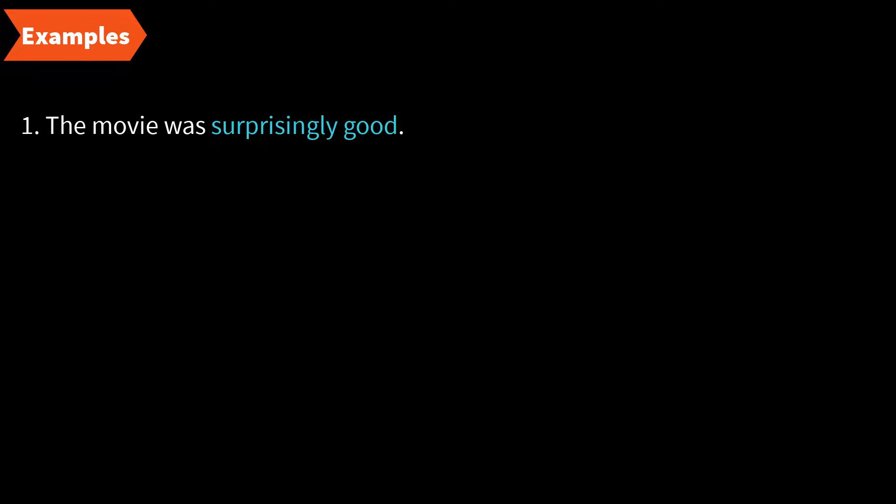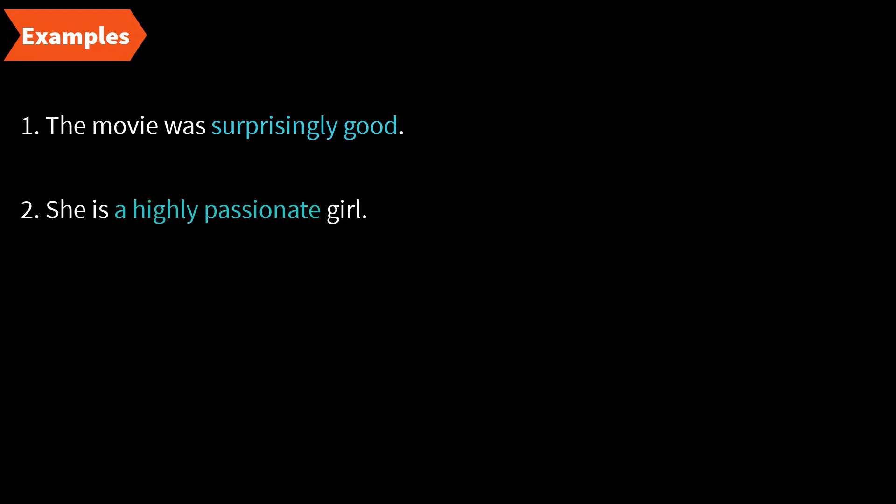Let us take some examples. 'The movie was surprisingly good.' In this example, the adjective phrase is 'surprisingly good,' which is giving information about the noun 'movie' — it is modifying the noun 'movie.' Next example: 'She is a highly passionate girl.' Here, 'highly passionate' is the adjective phrase giving information about the noun 'girl.'